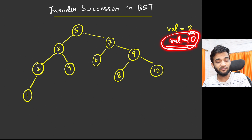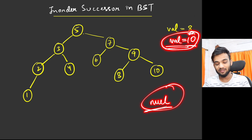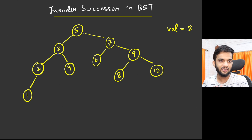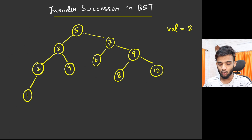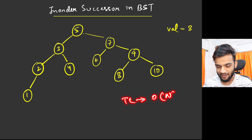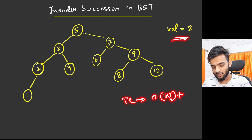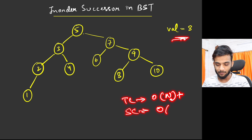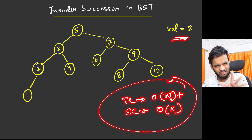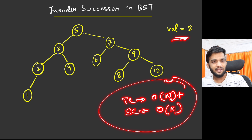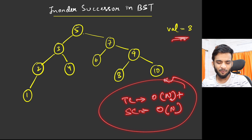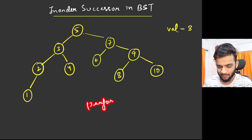There is an edge case: if you give value 10, there is no successor, so you return null. Otherwise you return the successor node. Storing the in-order has a time complexity of O(n) and space complexity of O(n). Can we do better?